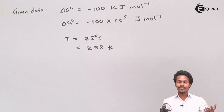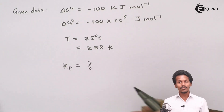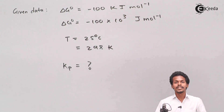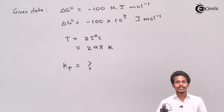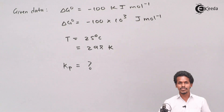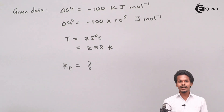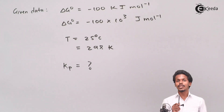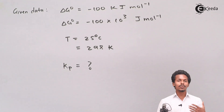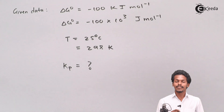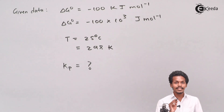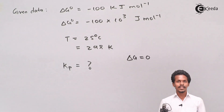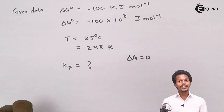From the given data we have to calculate Kp. We know the formula relating ΔG to the standard Gibbs free energy change: ΔG = ΔG° + RT ln Q, where Q is the reaction quotient. At equilibrium, Q becomes K (the equilibrium constant) and ΔG = 0. So we are left with the simplified formula.